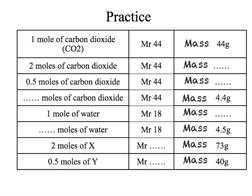In order to calculate these questions, we need to use the moles equals mass over MR equation. For the first one, we have two moles of carbon dioxide and an MR of 44, and we are asked to work out the mass. We simply multiply the number of moles by the MR, giving us a mass of 88 grams. Likewise, for the second question, we also need to work out the mass. This time we have half a mole, so our mass is going to be half of the MR, giving us a mass of 22 grams.